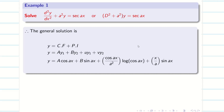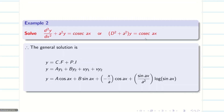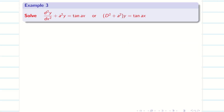In the part 1 video, we solved the problem on D squared plus a squared into y equal to secant ax, and then another problem in the same family: cosecant ax. In this session, we are going to solve problems on the tan family — tan ax and cot ax. Let us go into the problem.